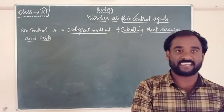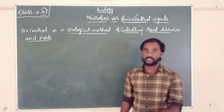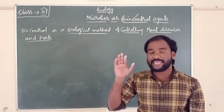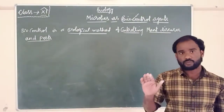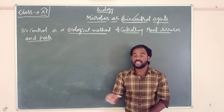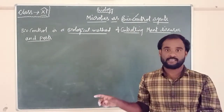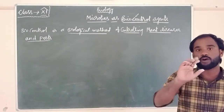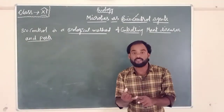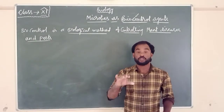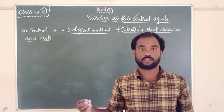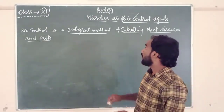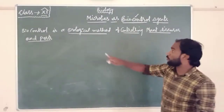Pests means small insects which damage the crop. You might have seen there are many insects which damage the crop. In order to control them, the farmer will spray certain pesticides on the crop to kill those insects. Because of this, there are many problems: the environment will be polluted, the soil will be polluted, and those chemicals may enter into the fruits and food products. If we eat those fruits and food products, those chemicals also enter into our body. So the use of chemical pesticides to control pests is harmful.